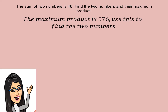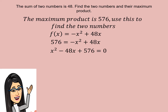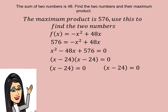Since we obtained the maximum product, use it to find the two numbers. Using f(x) is equal to negative X squared plus 48X, and substituting f(x) as 576, then writing in the general form: X squared minus 48X plus 576 is equal to 0. Using the factoring method, we will get the quantity (X minus 24) times the quantity (X minus 24) is equal to 0. Then solving by applying the zero product rule: X minus 24 equals 0, so both give us X is equal to 24.